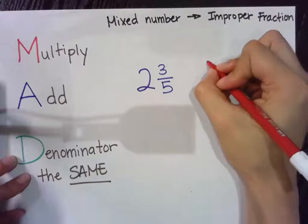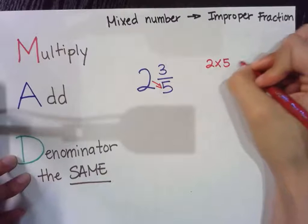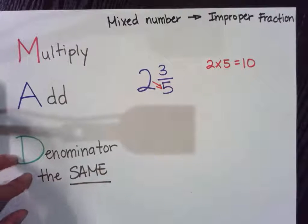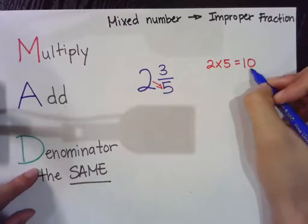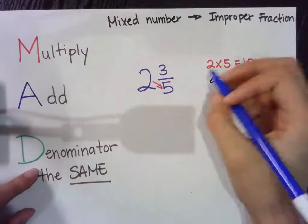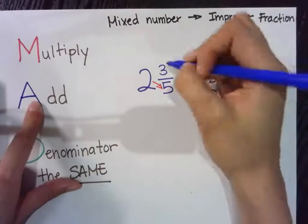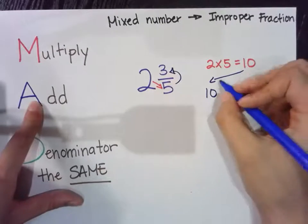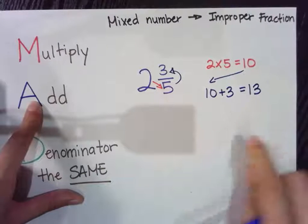So two times five equals ten. Next you're going to add this product. You're going to add your product to your numerator. That gives you thirteen.